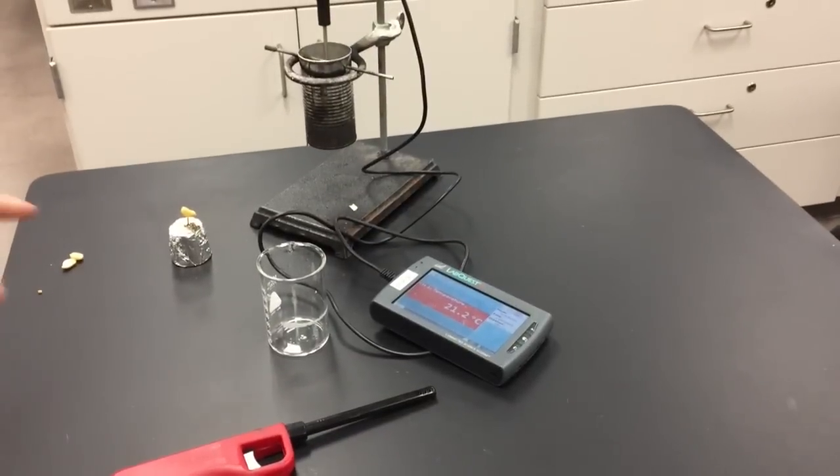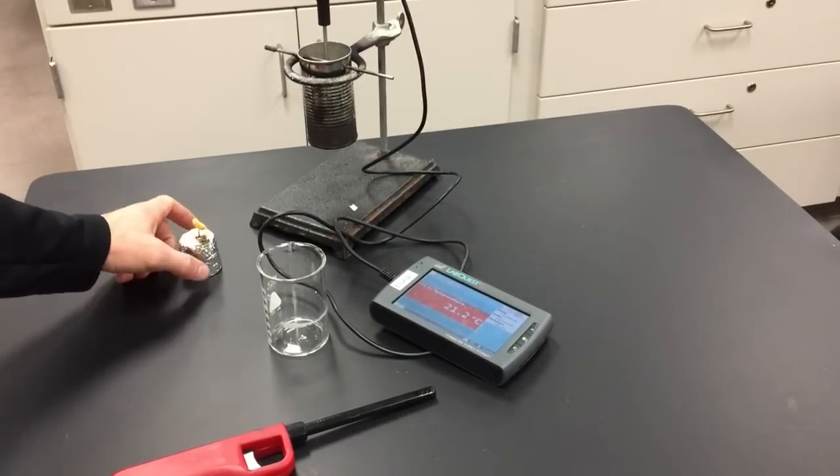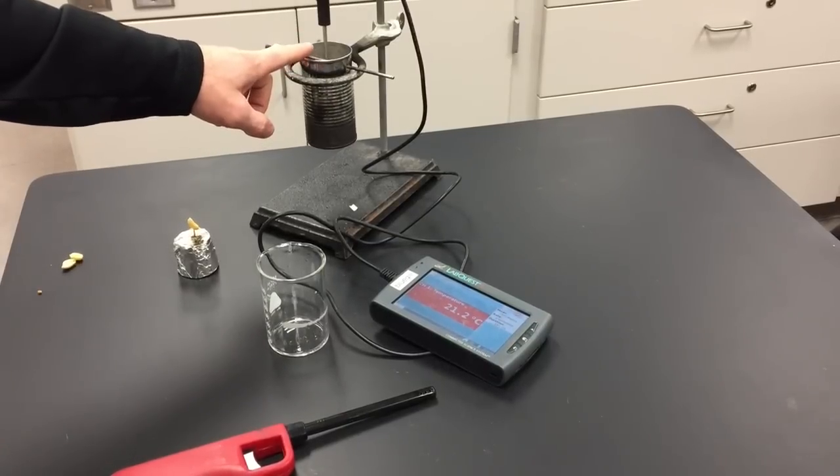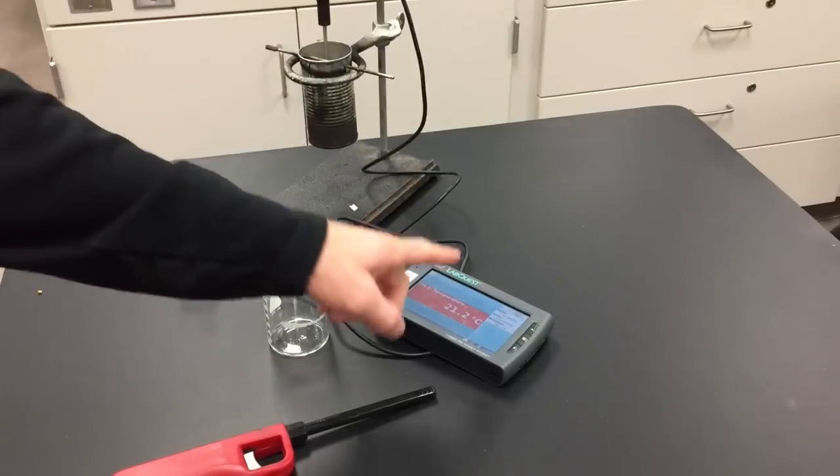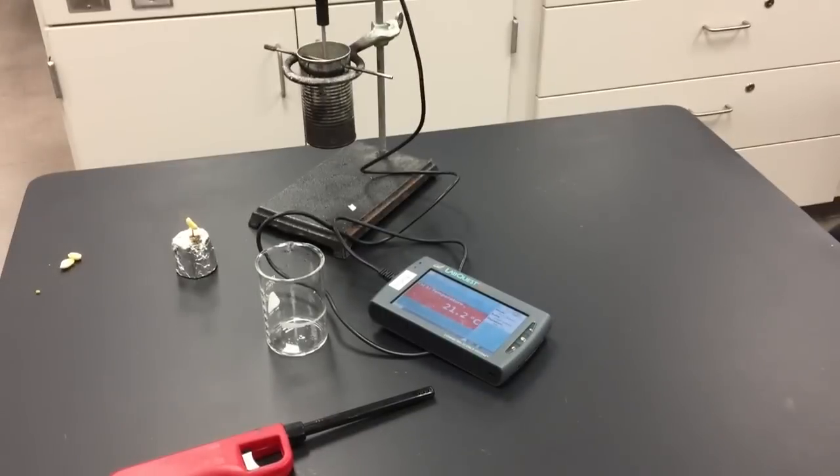This is everything you need to have before you start the burn: the weight of the peanut or whatever food you're burning, the empty weight of the can and the full weight of the can, and the starting temperature of the water. So I am ready to burn the food item. At this point, you will want to make sure to have goggles on.